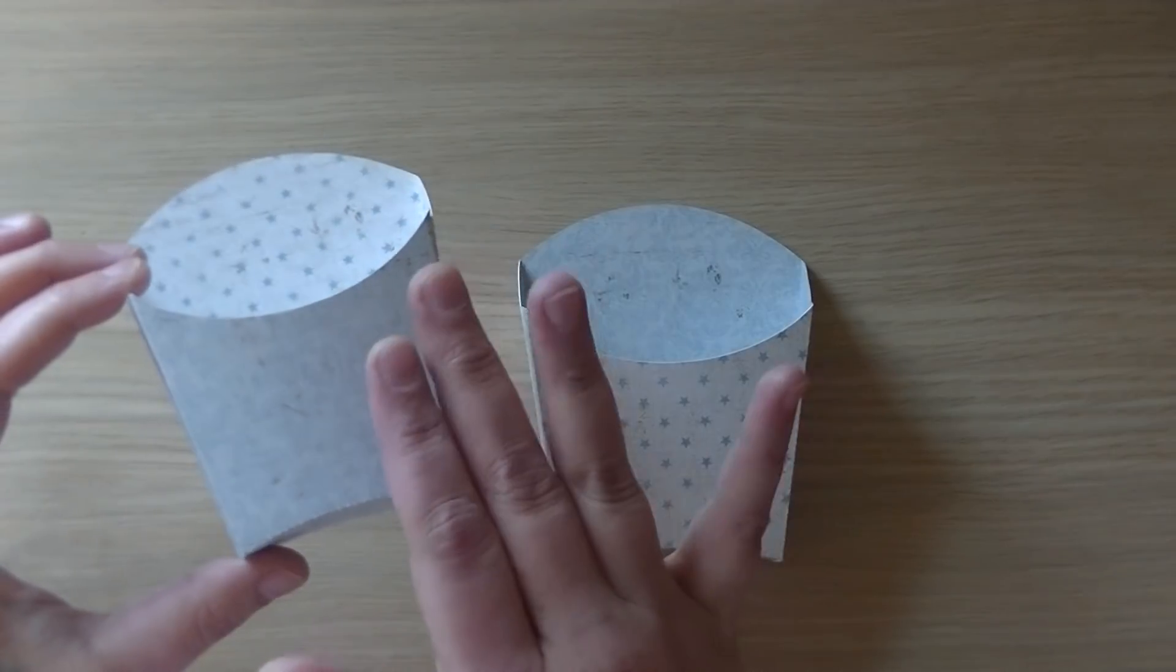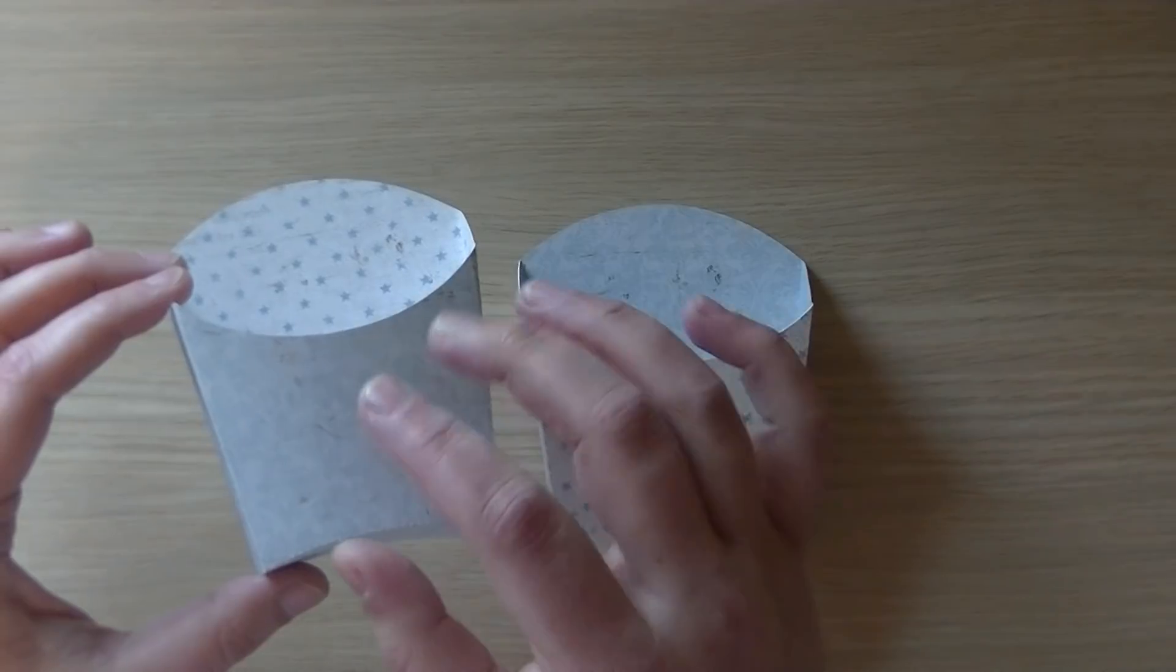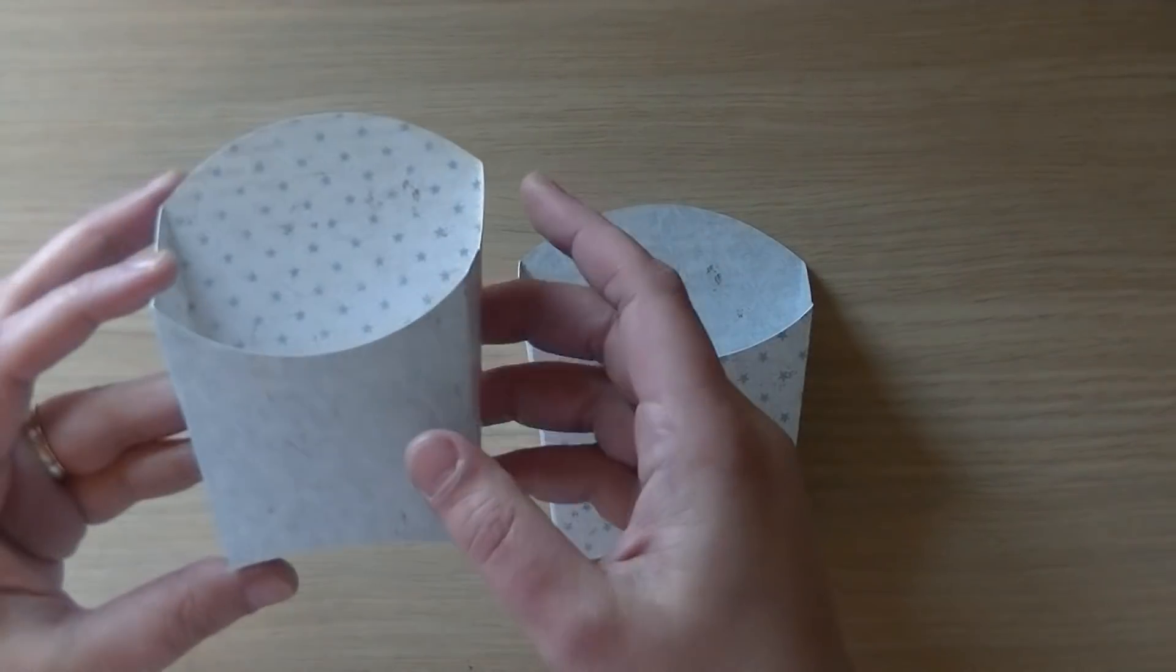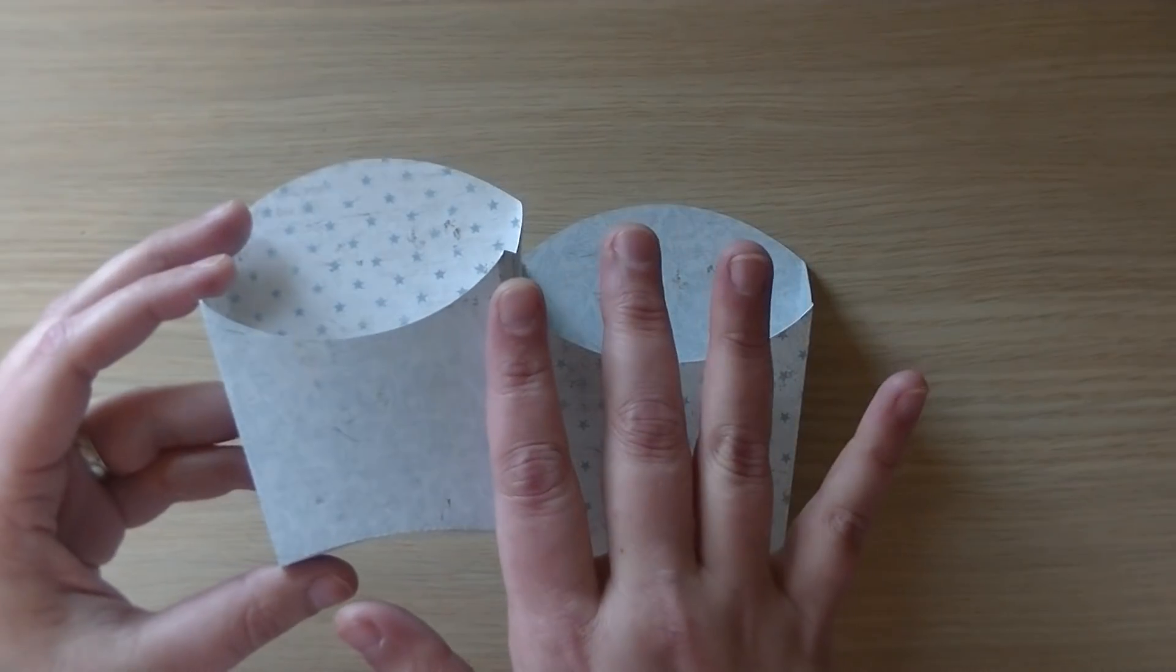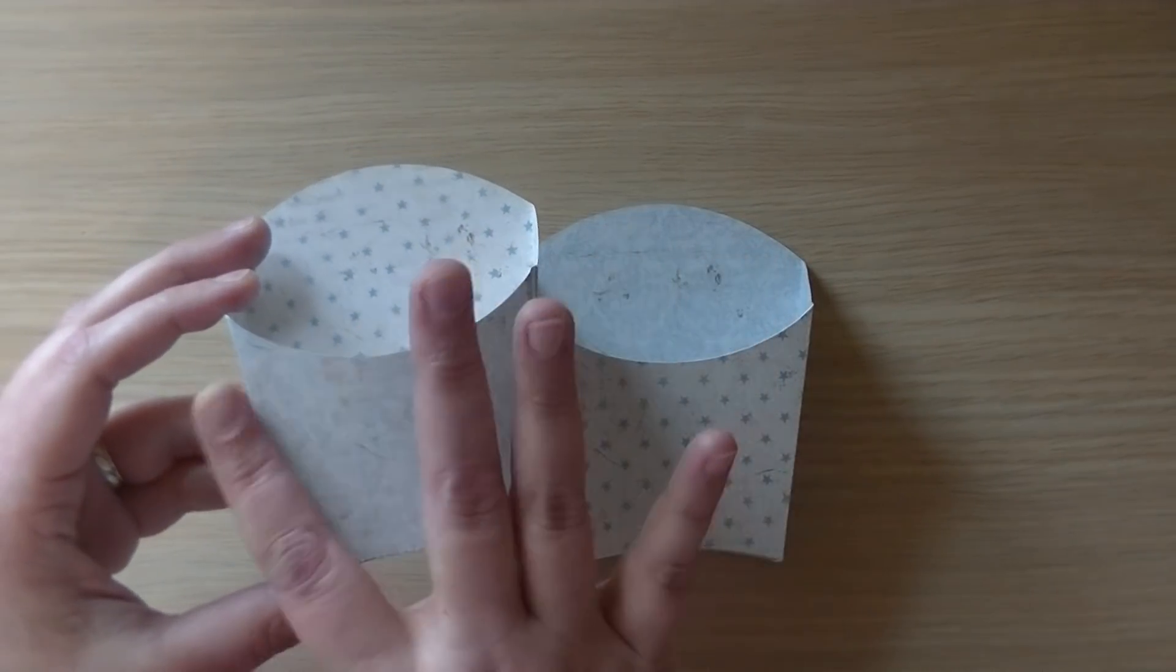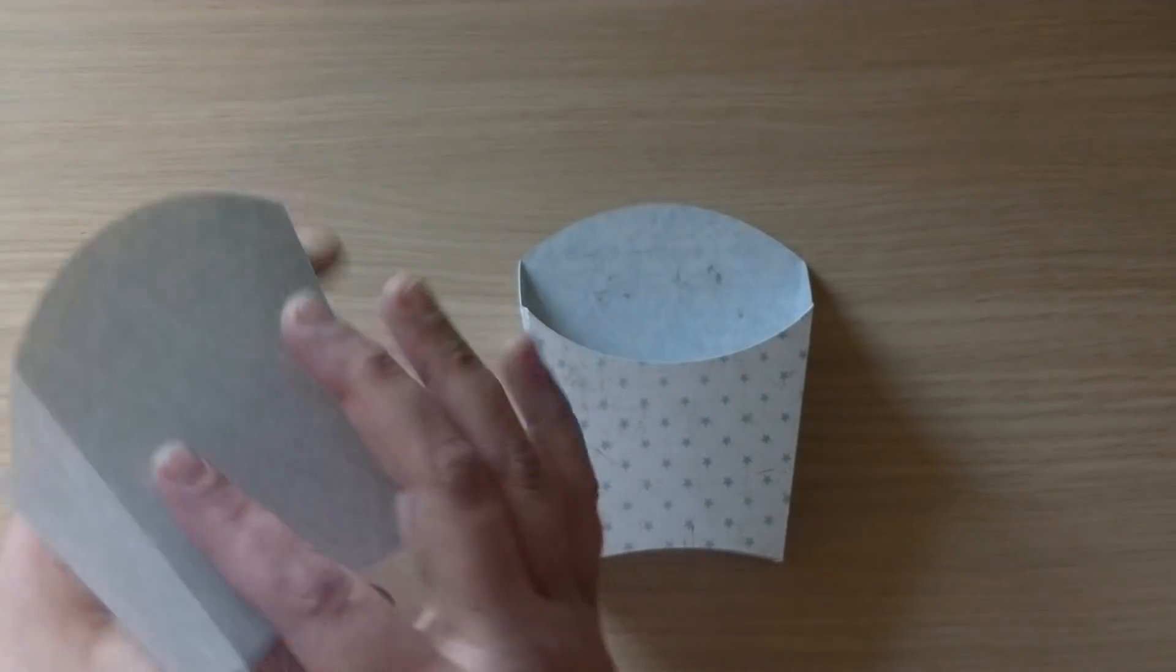So what I did was I made a front cover so you can cover it up, and it has a Moroccan texture look and feel, however you want to call it. Sorry. And I made a front piece and a back piece.